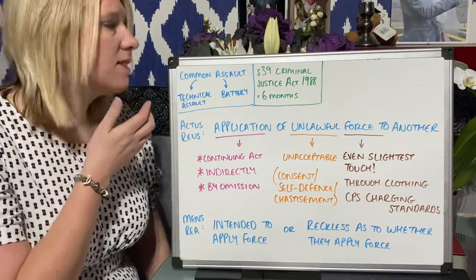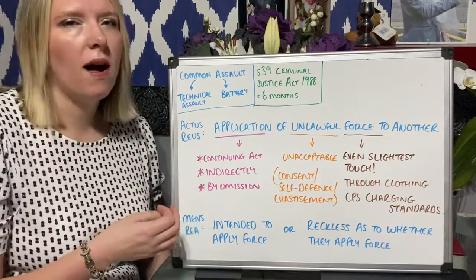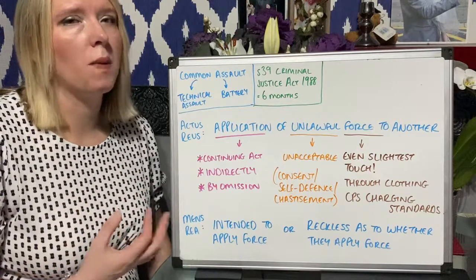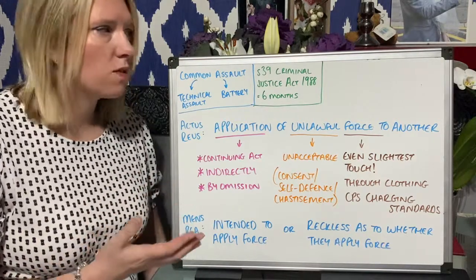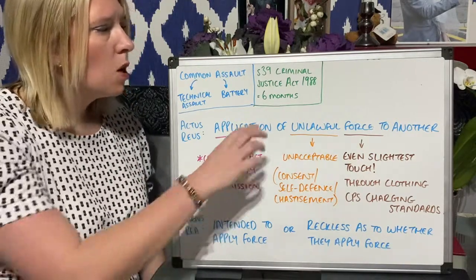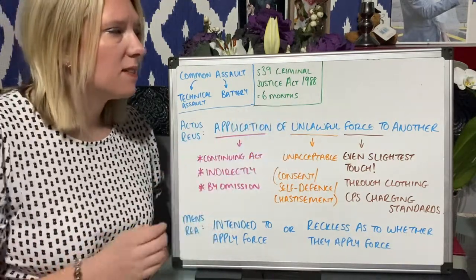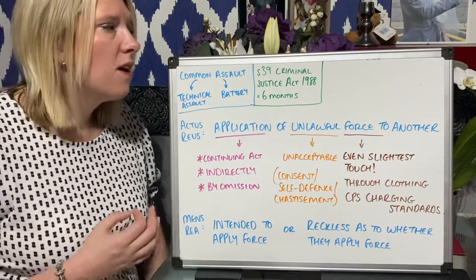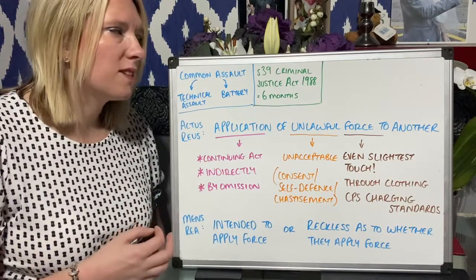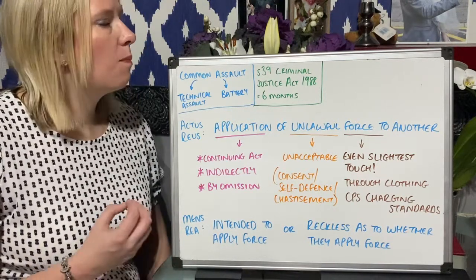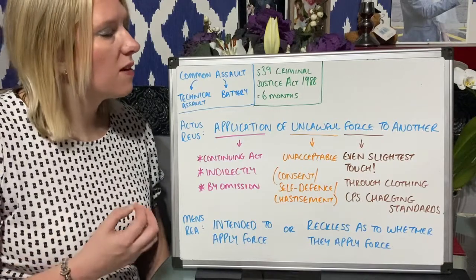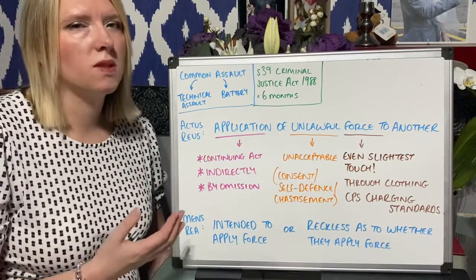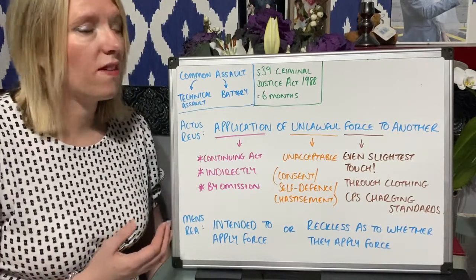The offences themselves are common law and are defined by judges through precedent. But the sentence and the offence is listed in section 39 of the Criminal Justice Act 1988. They are both summary offences, meaning you would get up to a maximum of six months imprisonment or a fine.